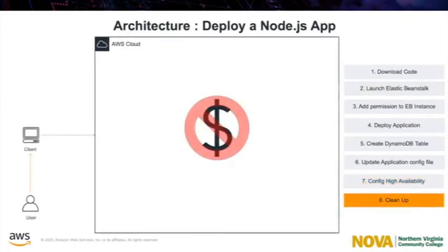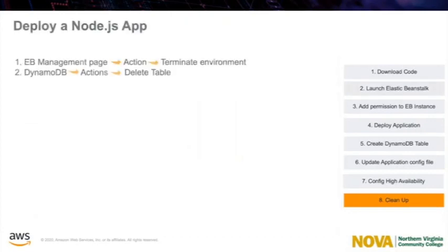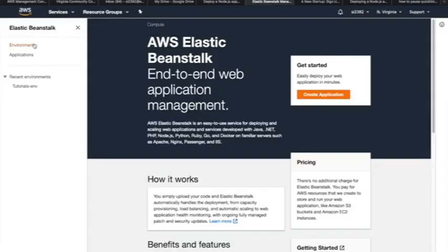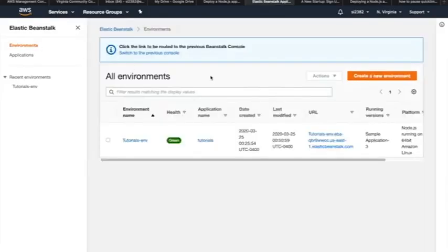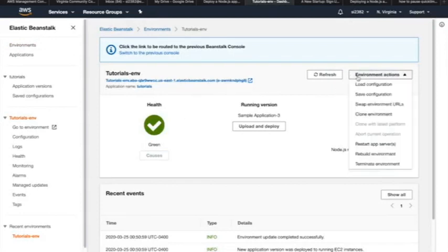When we finish working with Elastic Beanstalk, we can terminate our environment. Elastic Beanstalk terminates all AWS resources associated with our environment, such as Amazon EC2 instances, database instances, load balancers, security groups, and alarms. Also, we can delete the external DynamoDB tables that we have created.